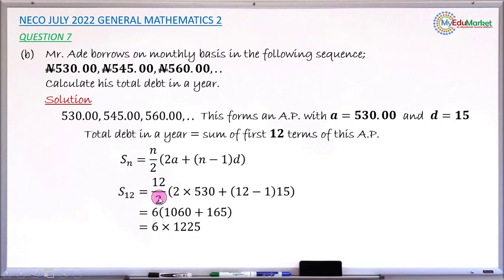And this will now be multiplied by 6, the 6 in place is 12 divided by 2. So multiplying these two values together correctly gives result 7,350 Naira.